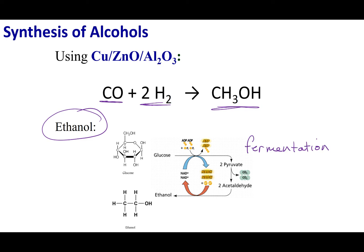In fermentation, you take something with a lot of sugars — grapes, barley, wheat, or some organic plant matter — and introduce microbes or bacteria. The bacteria consume the sugars, which possess a lot of potential energy. A byproduct of that consumption is ethanol. Fermentation is an important industrial process that makes a lot of ethanol for both feedstock chemicals and alcoholic beverages.